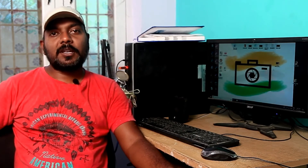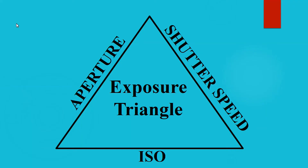Okay friends, this is the Exposure Triangle: aperture, shutter speed, and ISO. If you correct these three, we can correct the exposure triangle. If you want to change one element of the triangle, the other elements of the triangle will also change.